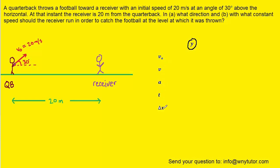We've arranged a table here to keep ourselves organized. In the table, we have the initial velocity, but remember, we're looking at the y direction. So let's come back to this picture and consider what the initial velocity of the football is in the y direction. We can zoom in on this picture. Here we've zoomed in and shown the initial velocity at 20 meters per second at that 30 degree angle. What we want to do is draw the x and the y components of this initial velocity. The x component is going to extend in the rightward direction, and the y component is going to extend straight up.